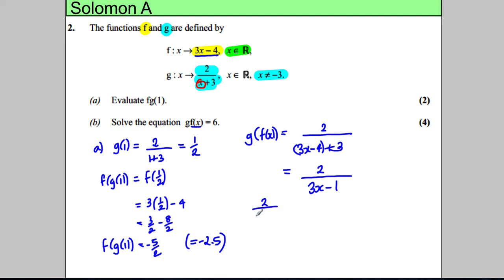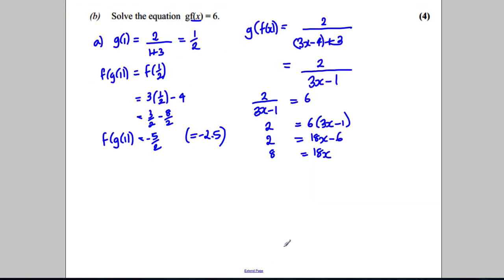So we're solving the equation 2 over 3x subtract 1 is 6. Multiply both sides by 3x subtract 1. 2 is equal to 6 times 3x subtract 1. Multiply out the bracket. 2 is equal to 18x subtract 6. Add 6 to both sides. And finally, divide by 18. So x would therefore be 8 divided by 18, which you should obviously simplify. You can divide top and bottom by 2, so it would be 4 over 9. And you're done.